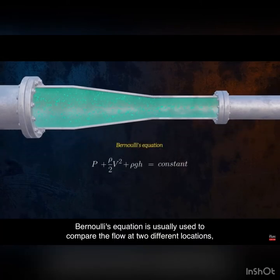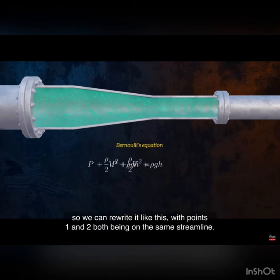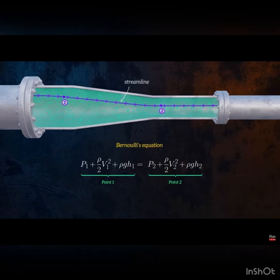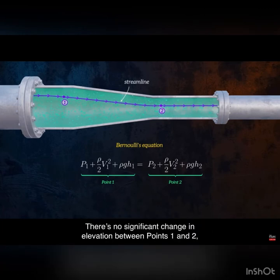Bernoulli's equation is usually used to compare the flow at two different locations, so we can rewrite it like this, with points 1 and 2 both being on the same streamline.